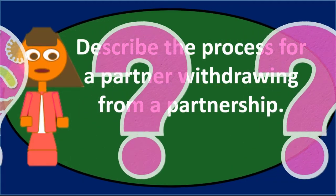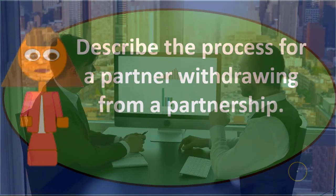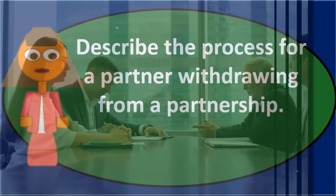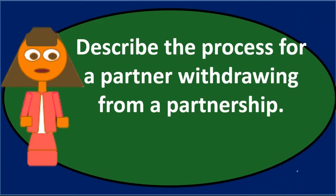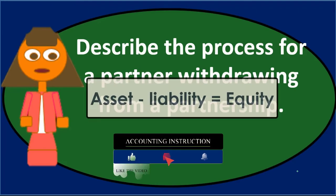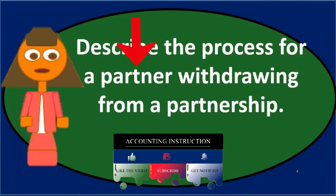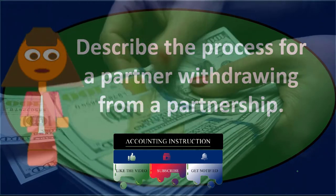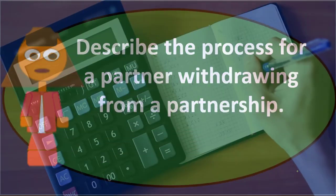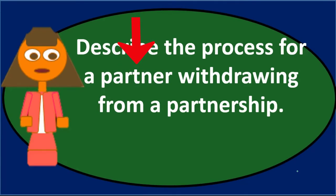The key question is: how much are we going to pay the partner that leaves, and how are we going to record that? Typically, when a partner is going to leave, we look at the capital accounts. If there's an agreement between the partners, that agreement may or may not coincide with the net value of the capital accounts — meaning assets minus liabilities equals equity. You would think we would pay the leaving partner cash equivalent to their capital account balance and simply remove them, which would be the simplest transaction.